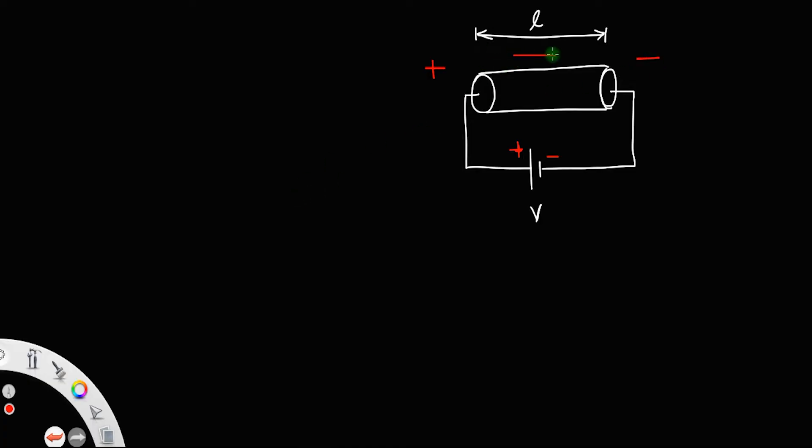There is an electric field in the direction from positive side to the negative side, that is from left to right. Let the cross-sectional area of the conductor be A, and a current I will flow along the electric field.